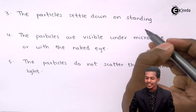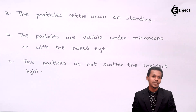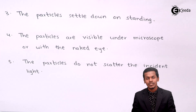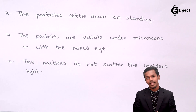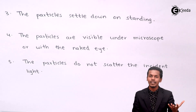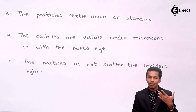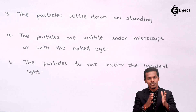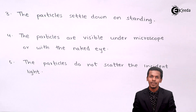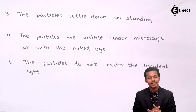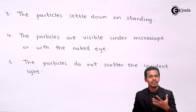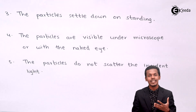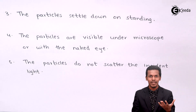The third property is that the particles settle down on standing. This is a key difference from true solutions and colloidal solutions. In a true solution, solute particles are evenly distributed throughout the medium and do not deposit at the bottom. Colloids also do not settle — they remain dispersed in the dispersion medium. But in suspension, particles settle down because of their larger particle size and correspondingly higher mass.